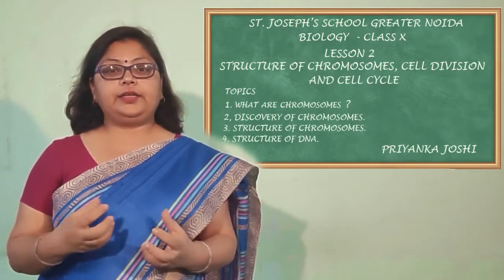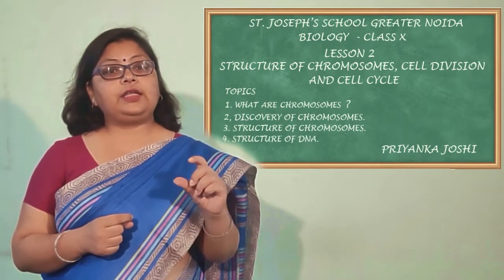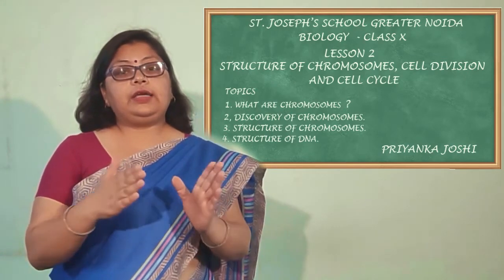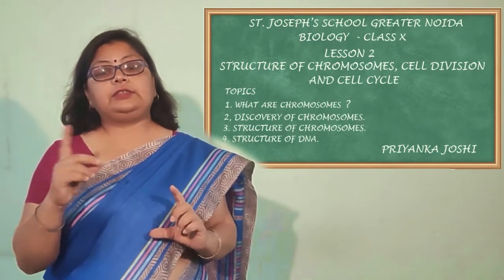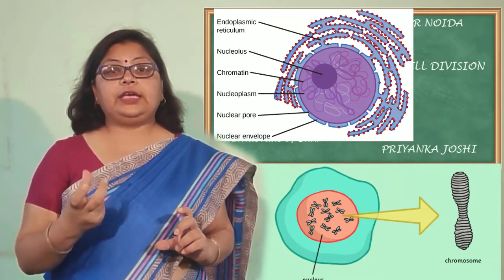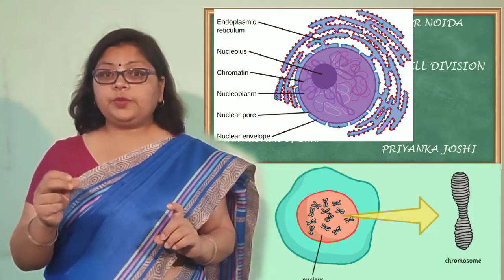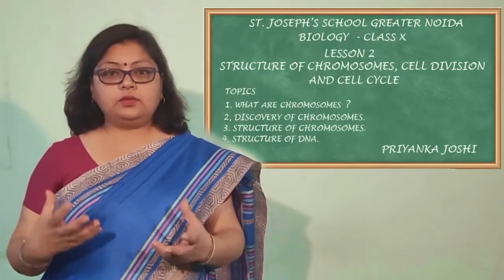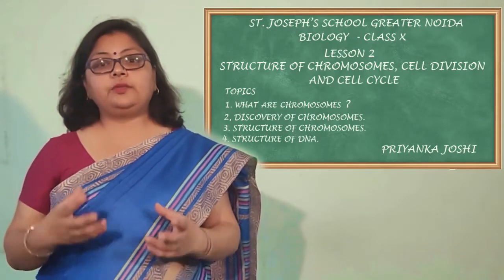Later on, when scientists studied the nucleus more, they found some condensed bodies inside the nucleus, which were named as chromosomes. These chromatin fibers, during the time of cell division, turn into chromosomes — the condensed bodies. Since these condensed bodies take the dye very readily, the name chromosomes came about: 'chroma' means color and 'soma' means body, meaning 'colored body.' So chromosomes are highly condensed coiled chromatin fibers.